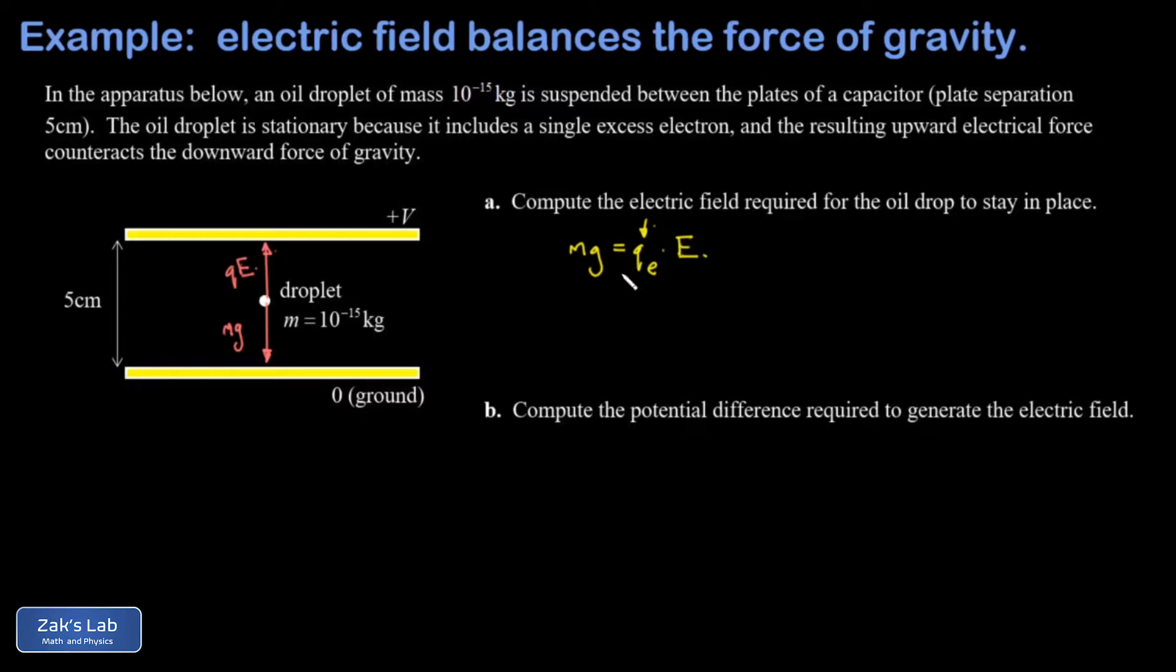All I have to do here is solve for capital E, the electric field, and then we plug the numbers in. Our droplet is 10 to the negative 15 kilograms. G will use the approximation 9.8, and then the charge on the electron. And we're just speaking in magnitudes here. I'm not worried about the minus sign in front. That minus sign really just takes care of the direction of the force, which we already did in the diagram. And when I run the numbers on this, I get an electric field strength of 61,250 volts per meter.